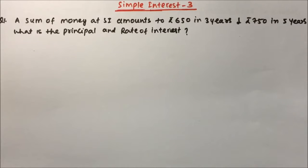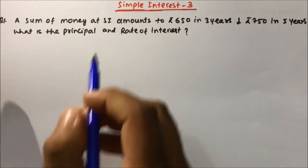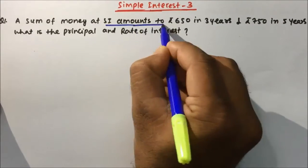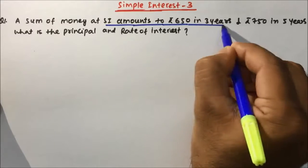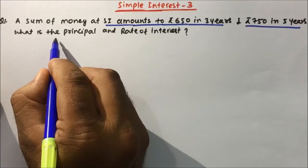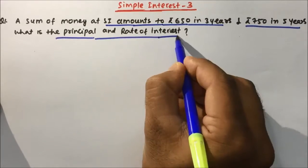Hi friends, our today's topic is simple interest and in this video we are going to solve few important questions of simple interest which generally come in our exams. The first question is: a sum of money at simple interest amounts to 650 in 3 years and 750 in 5 years. They are asking you to calculate the principal and rate of interest.